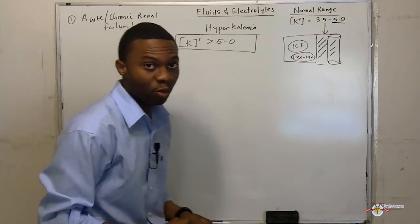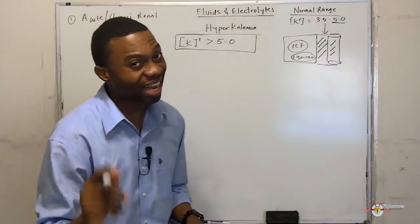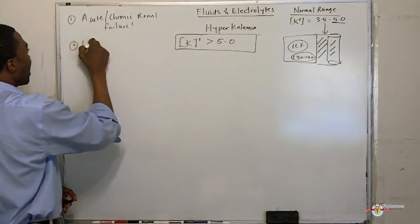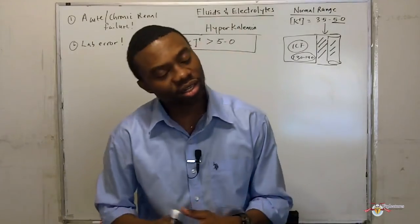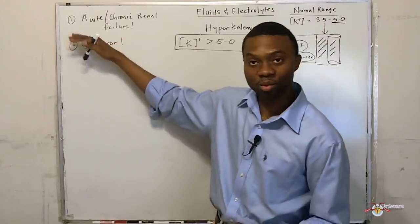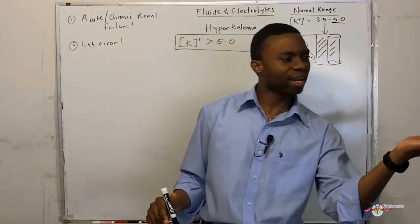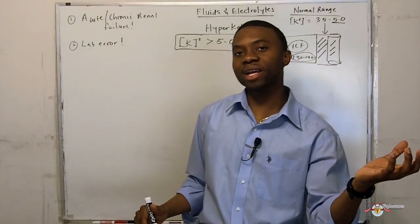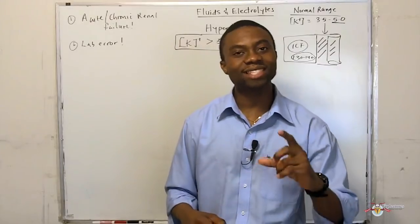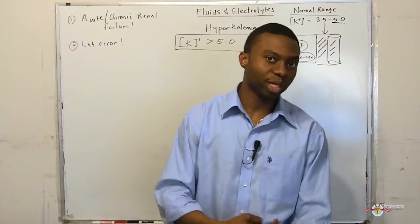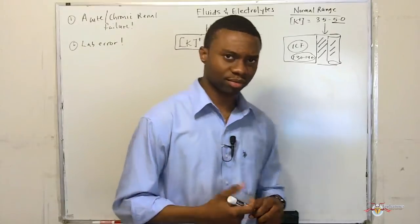We will talk about the mechanism when we get to how we evaluate patients. Also, lab error is another very common cause of hyperkalemia. So when somebody's potassium is very high, could it be spurious? Could it be caused by red blood cells lysing inside a test tube? Or is it a redistribution process? Let's start.